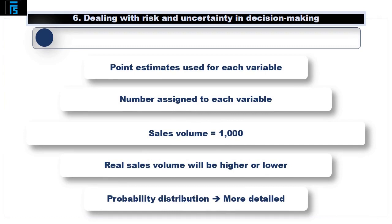With Jack's yogurt decision, he used what are known as point estimates for each of the variables. In other words, he gave each variable one number. Take sales volume, for example. Jack estimated sales volume as being 1000.